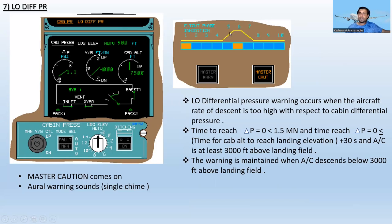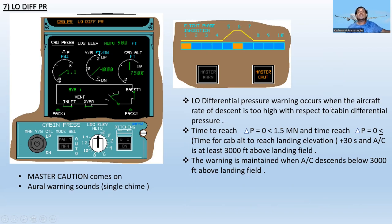The next warning is Low Differential Pressure. The master caution comes on in amber and the oral warning sounds as a single chime. The fault message shows 'Cabin Pressure Low Differential Pressure.' This warning occurs when the aircraft rate of descent is too high with respect to cabin differential pressure — specifically when the time to reach delta pressure equal to zero is minus 1.5 minutes, and the time to reach delta pressure zero or less is less than or equal to the time for cabin altitude to reach landing elevation plus 30 seconds, and the aircraft is at least 3,000 feet above landing field. The warning is maintained when the aircraft descends below 3,000 feet above landing field. Applicable flight phases are one and six.